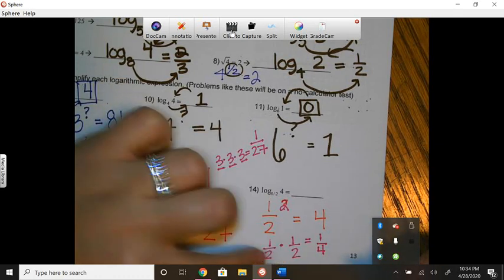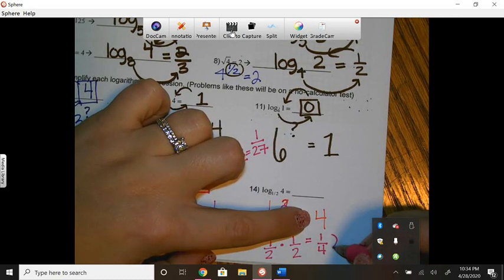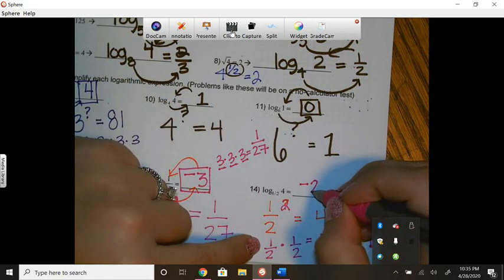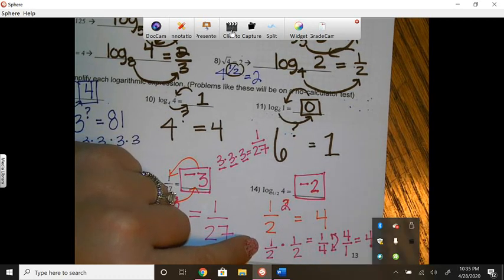Well, it needs to be 4. So if we flip this, then it would be 4. So we would need our exponent to be negative 2.